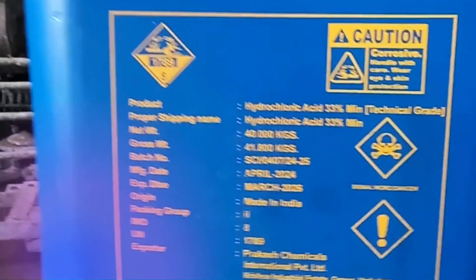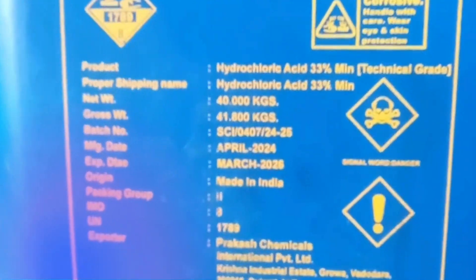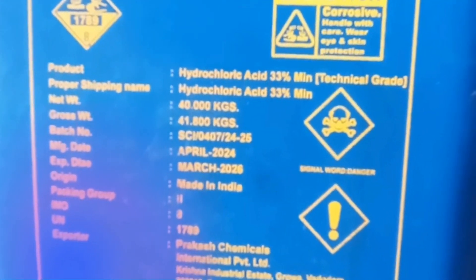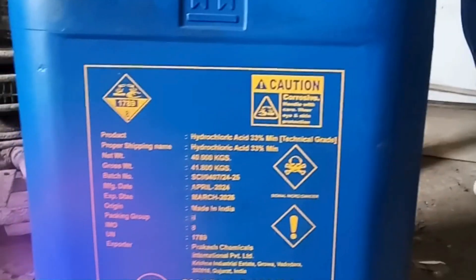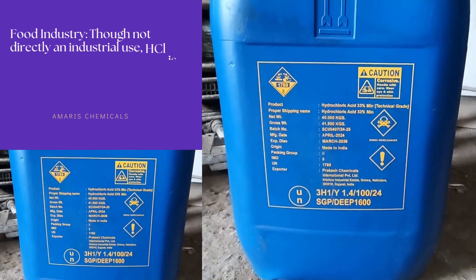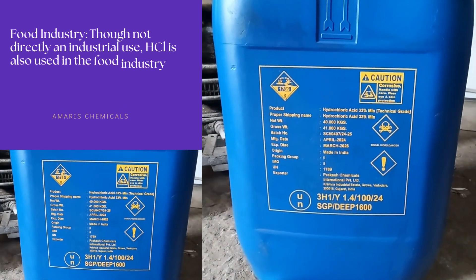HCl is also used to produce inorganic compounds such as iron-3-chloride and polyaluminum chloride, which are used as coagulants in water treatment.